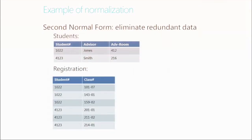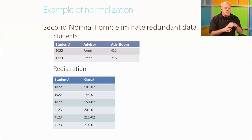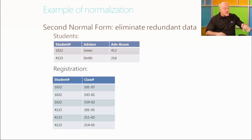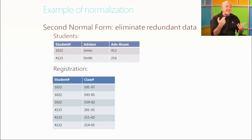Moving into the second normal form, we eliminate redundant data. We've taken that one table and created two tables. The first table, Students, has student 1022 with advisor Jones in room 412; student 4123 has a different advisor in room 216. We also created a Registrations table — student 1022 is attending classes 101-07, 143-01, and 159-02. Student 4123 is also taking three classes. We've split the content out to avoid or eliminate that redundant data.